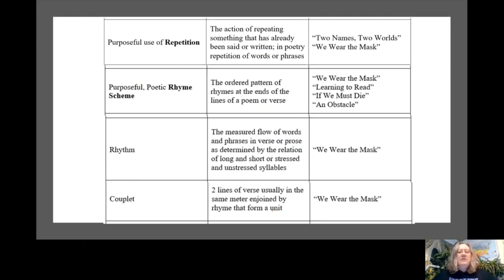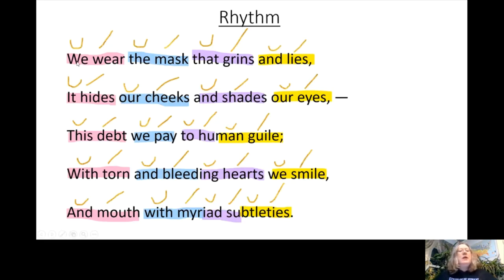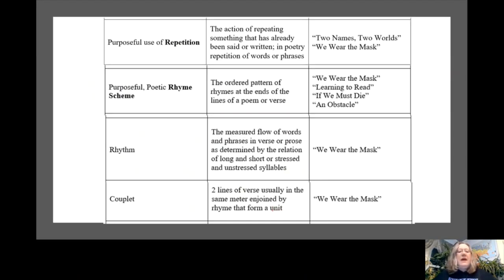Our final poetic device is a couplet. A couplet is two lines of verse, usually in the same meter — which is what we just discussed with rhythm — and joined by rhyme that form a unit. Each iamb is one meter, so a line with four iambs has four meters. Please pause this video and write this definition on page 107 of your packet. When we think about a couplet, the rhythm of each line needs to be the same, and because we're looking at rhyming couplets, the two lines will also rhyme.